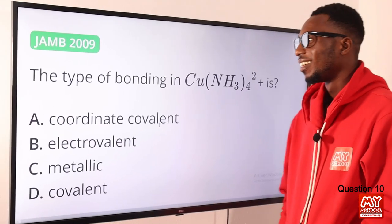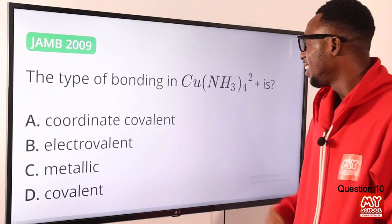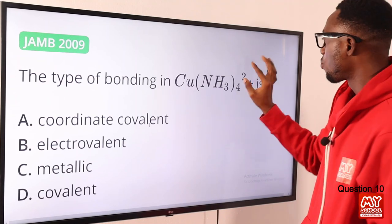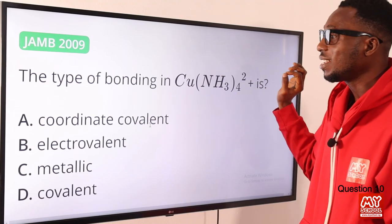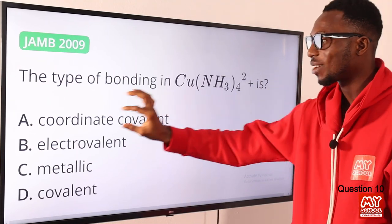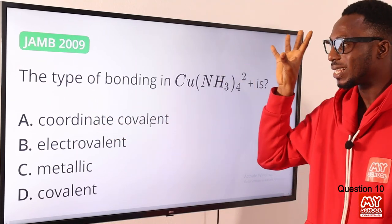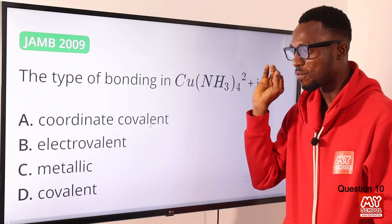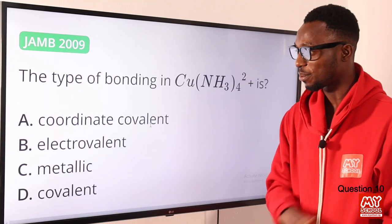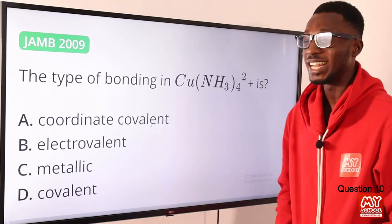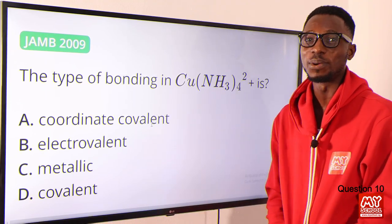Question 10: the type of bonding in the tetraamine copper(II) ion is coordinate covalent bonding. So the correct option is option A for coordinate covalent bond.